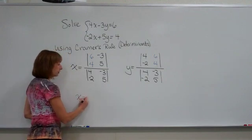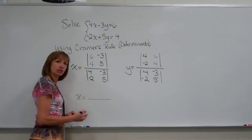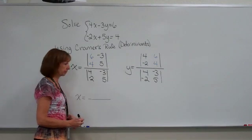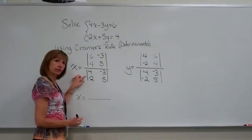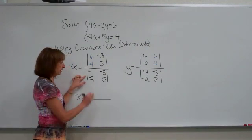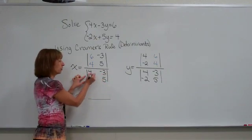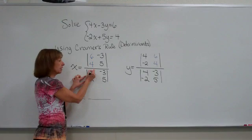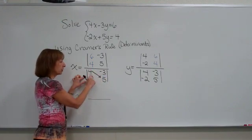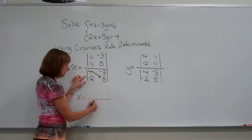Now all we have left to do is to calculate each of these determinants and find their quotient. So let's first check the denominator determinant. It's two rows, two columns, so to find that determinant, we multiply the upper left-hand number to the lower right-hand number, so 4 times 5 is 20,